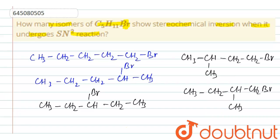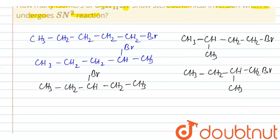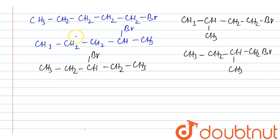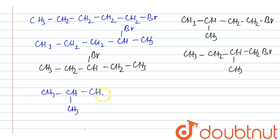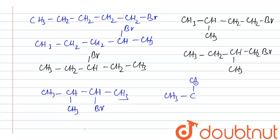The remaining possible branched isomers include: CH(CH3)2-CHBr-CH3 (2-bromo-3-methylbutane), and (CH3)3C-CH2Br (1-bromo-2-methylbutane / neopentyl bromide type). These account for the remaining branched-chain isomers of C5H11Br.